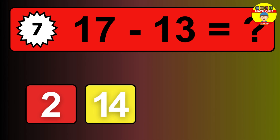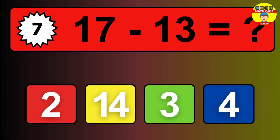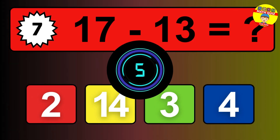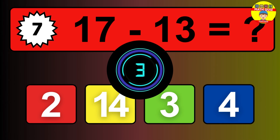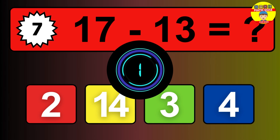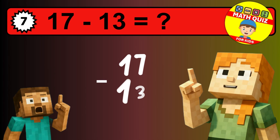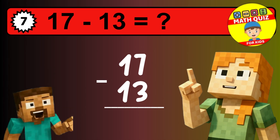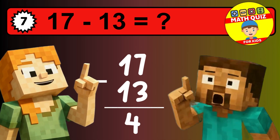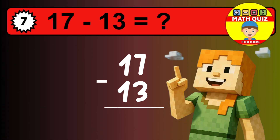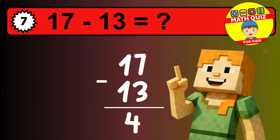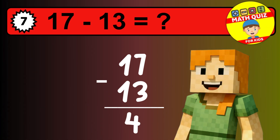What is 17 minus 13? Time to think. Let's solve this step by step. We start with the units: 7 minus 3 is 4. Then we go to the tens: 1 minus 1 is 0. The final answer is 4.